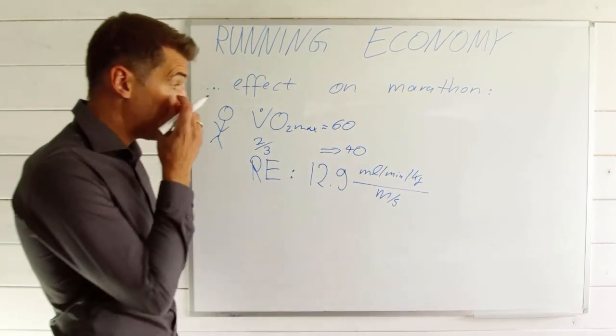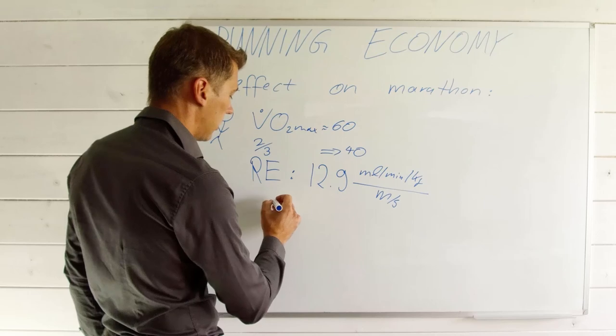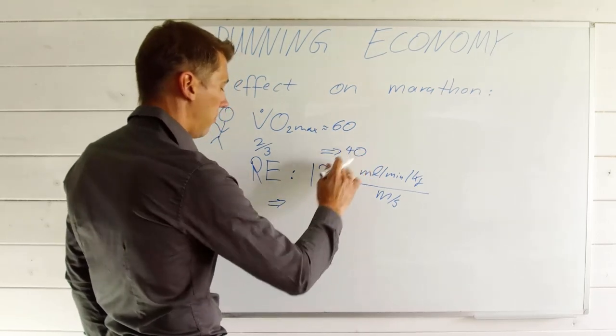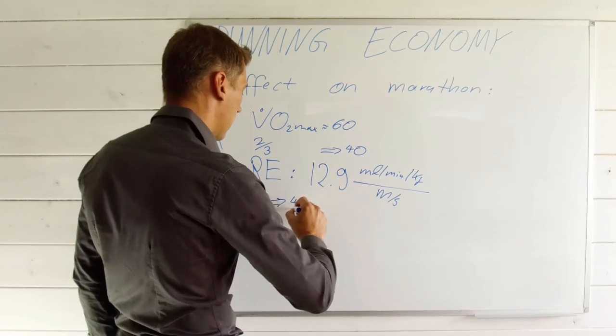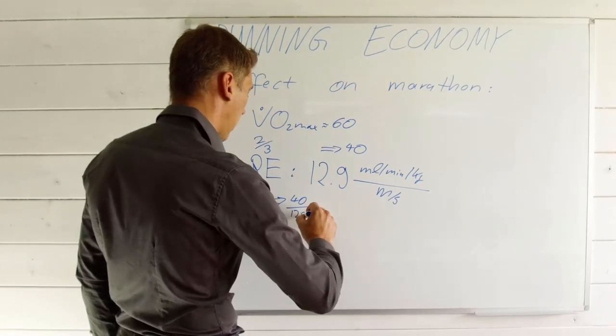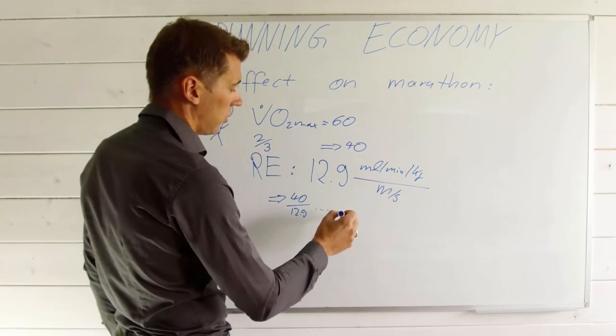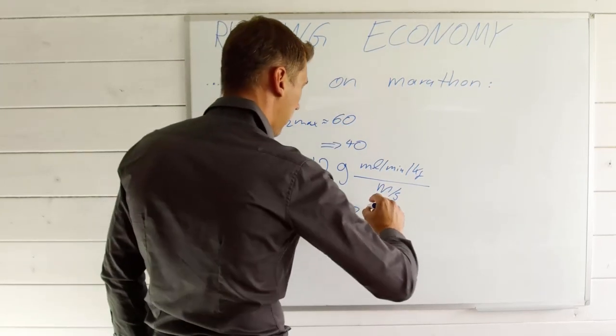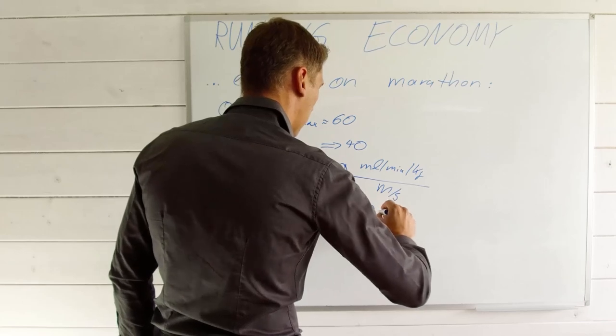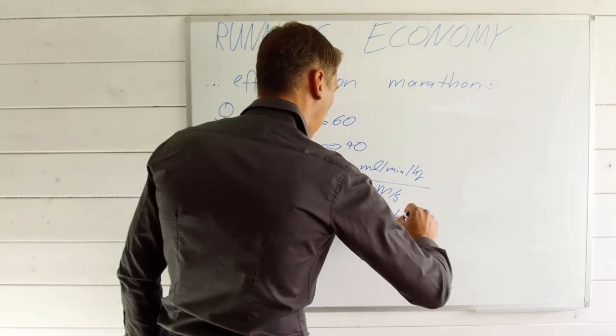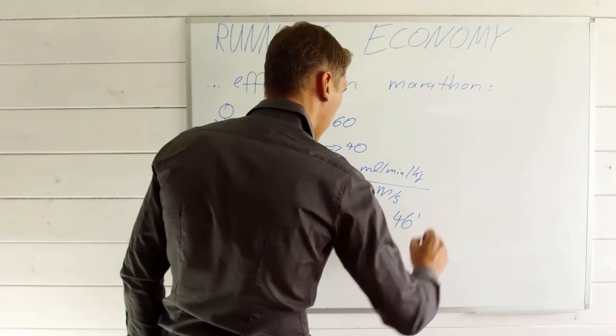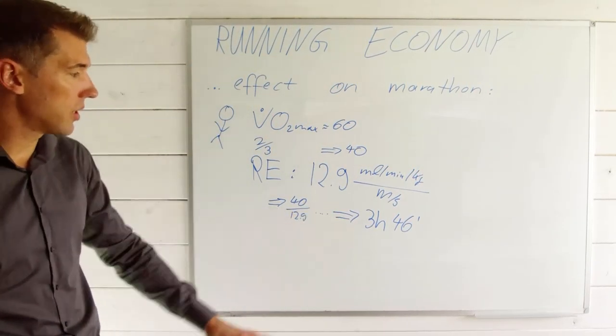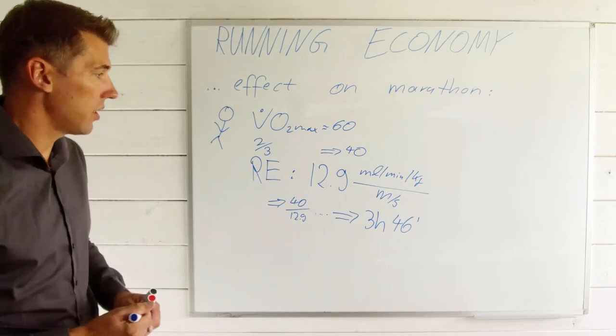Okay, so what this means, as a result, the marathon time is going to be defined by 40 milliliters divided by 12.9, and then this gives you a certain speed, and so on and so forth. Long story short, it ends up at a marathon time of 3 hours and 46 minutes. It's a little bit more than 3 meters per second.